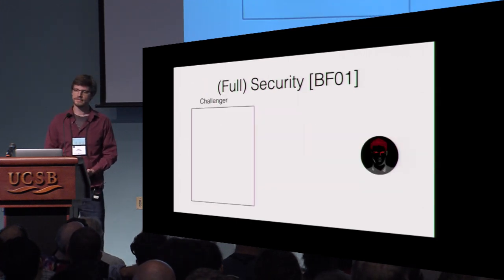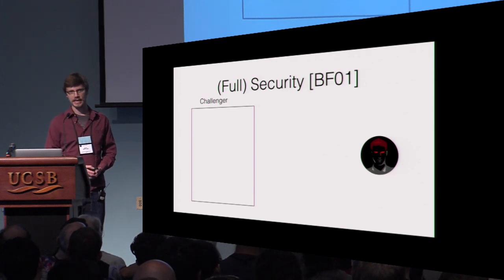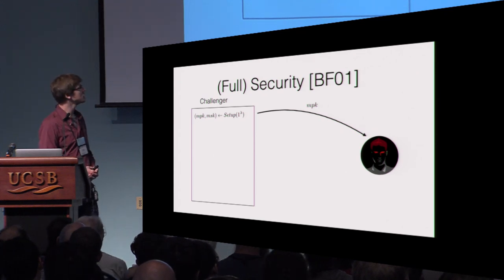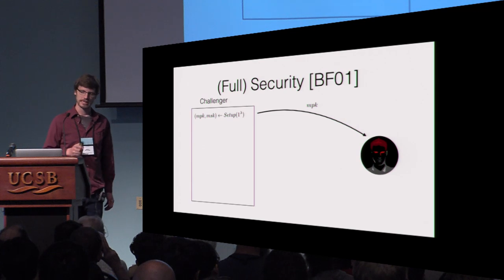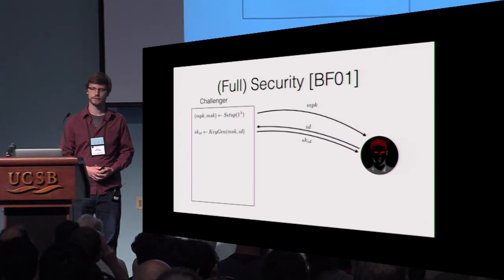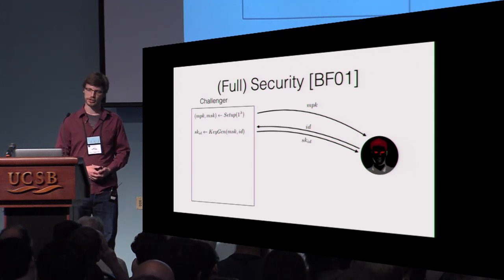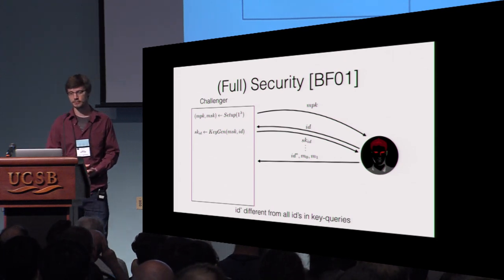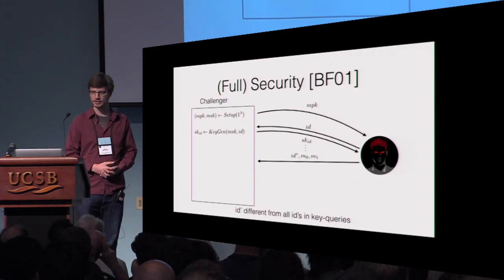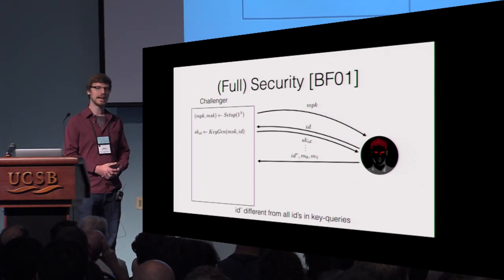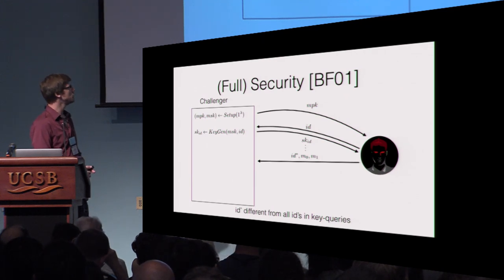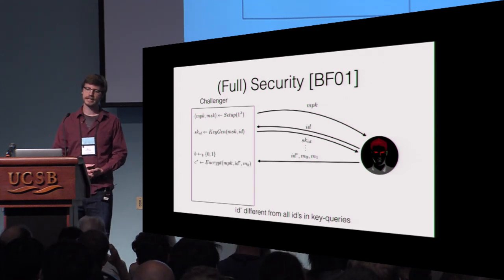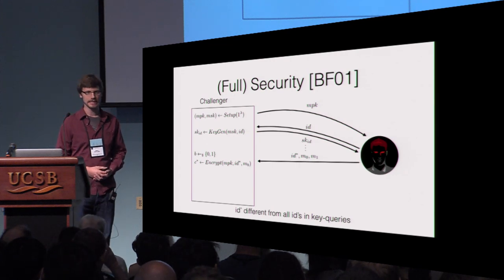Security is defined via the following experiment between a challenger and a PPT adversary. First, the challenger generates a pair of master public and master secret keys, and the master public key is given to the adversary. The adversary is allowed to query identity keys for an arbitrary number of identities of his choice. At some point, the adversary passes a challenge identity ID* and two messages M0 and M1 to the challenger, with the requirement that ID* is different from all identities for which the adversary has queried keys. The experiment chooses a random bit B and encrypts message M_B under the identity ID*.